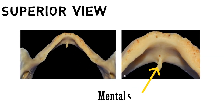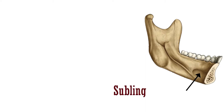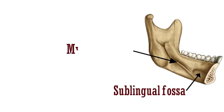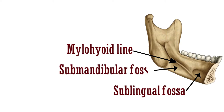Let's have a look at the superior view of the bone. This projection is the mental spine. Nearer to the inferior border of the mandible there is the digastric fossa. This is the sublingual fossa, present on each side of the mental spine. This line is the mylohyoid line, and just below this line is the submandibular fossa.